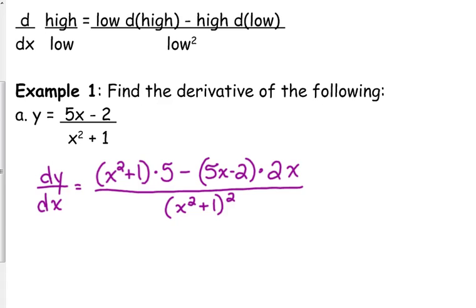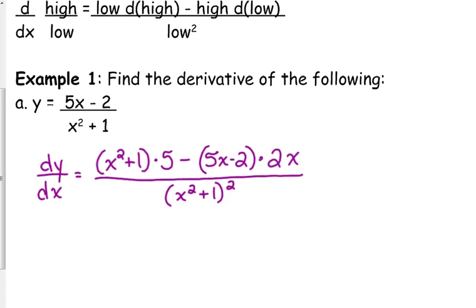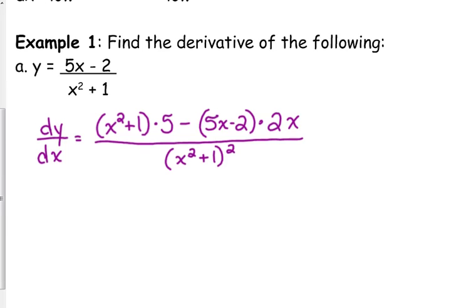Does it have to be in that order? Yes. Now, you can put the 5 in front of the x squared plus 1, and you can put the 2x in front of the 5x minus 2, but yes, the 5 times x squared plus 1 has to come first, and the other one has to come second, because of that minus sign. To the bottom function, yes.